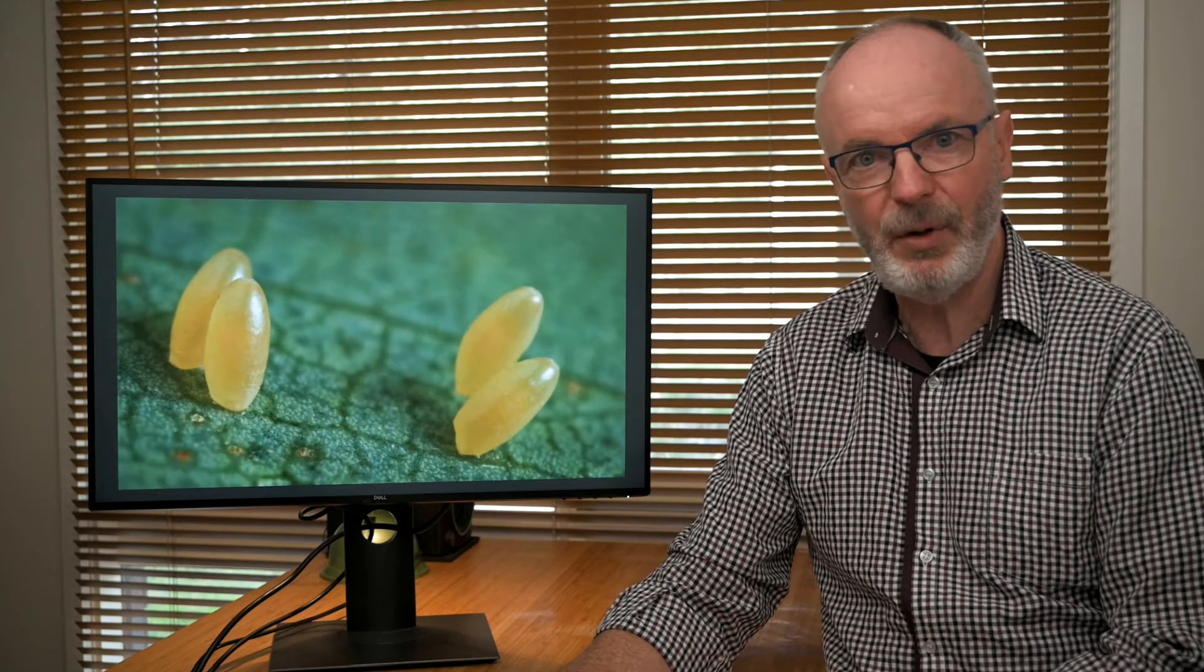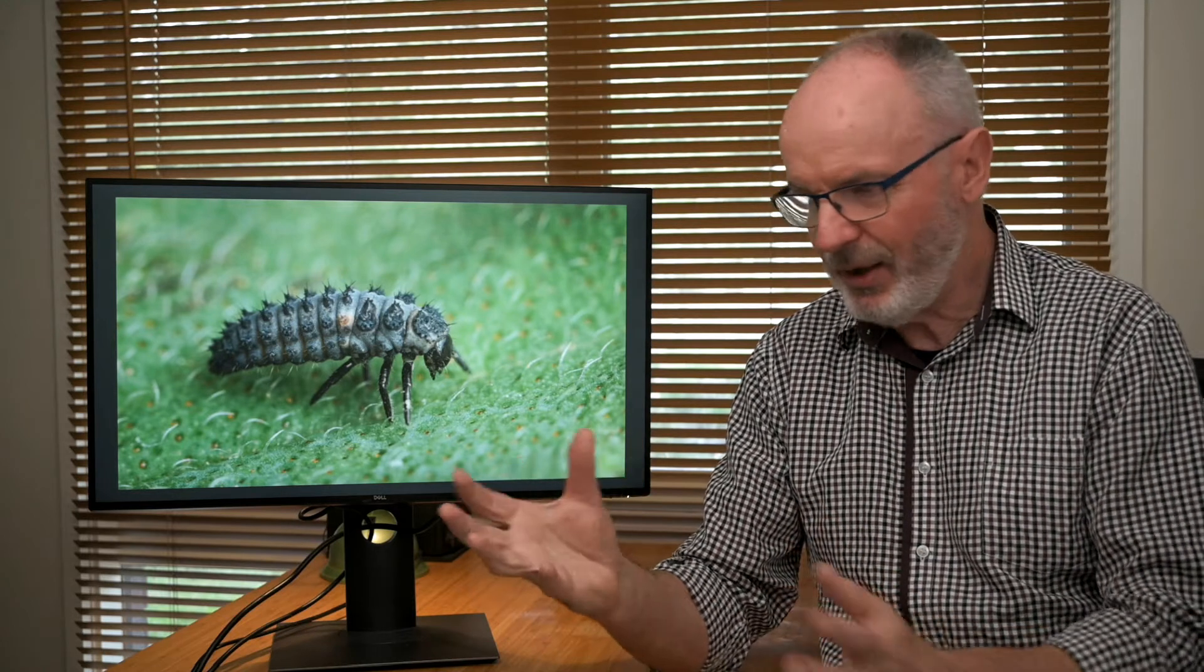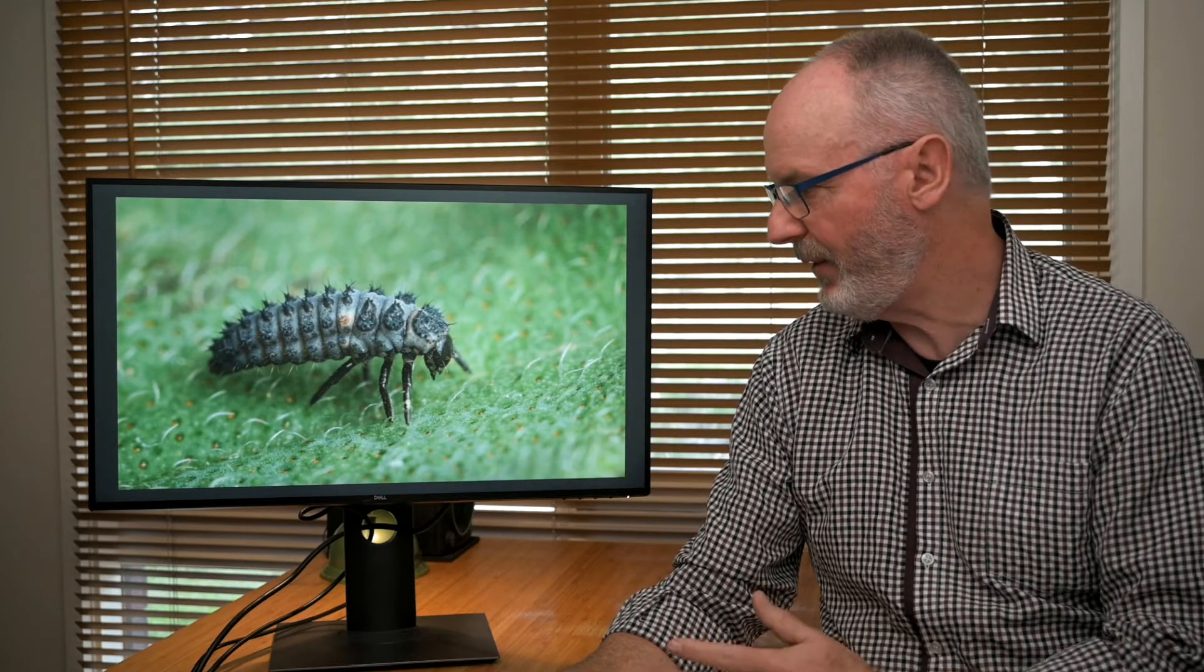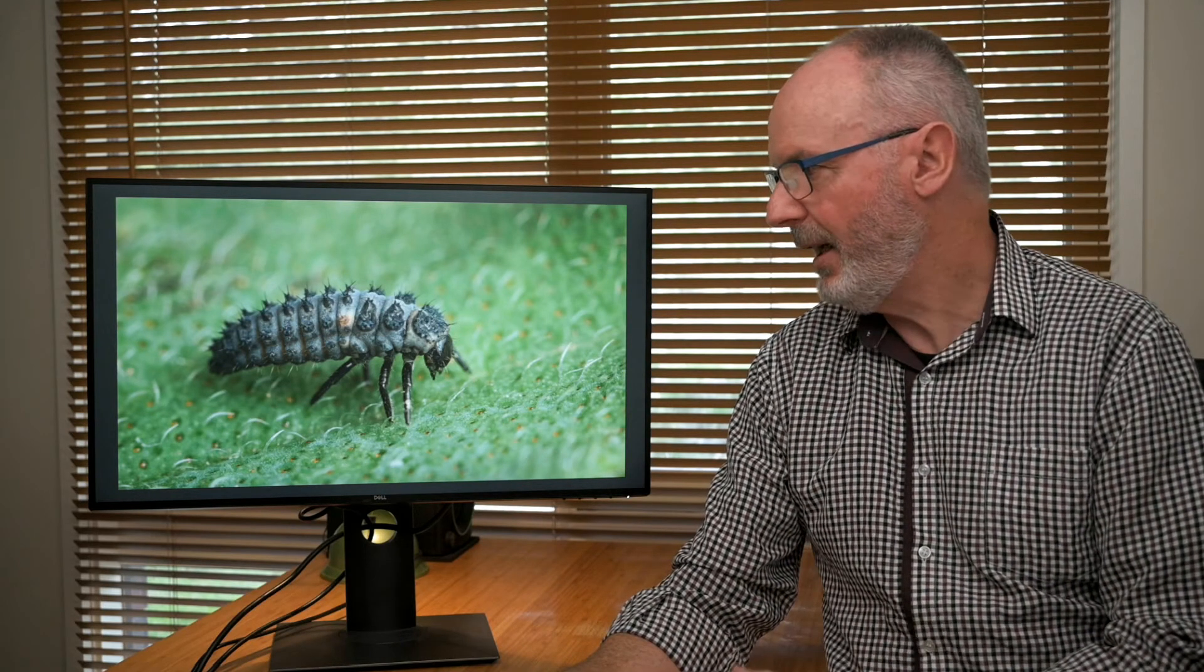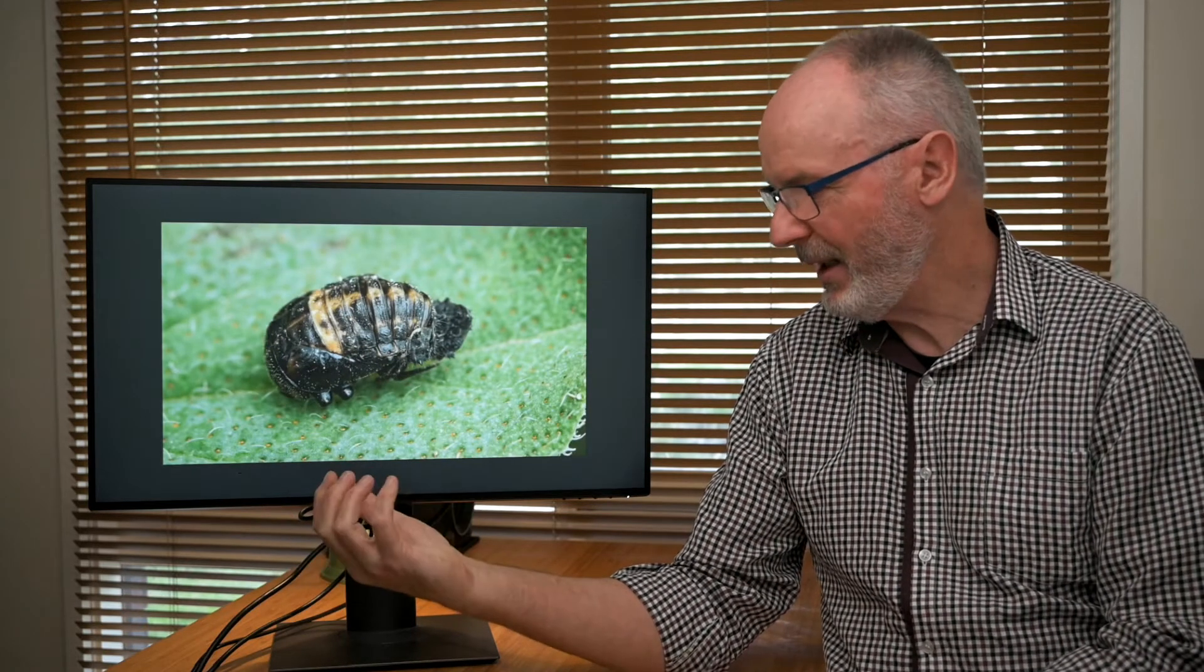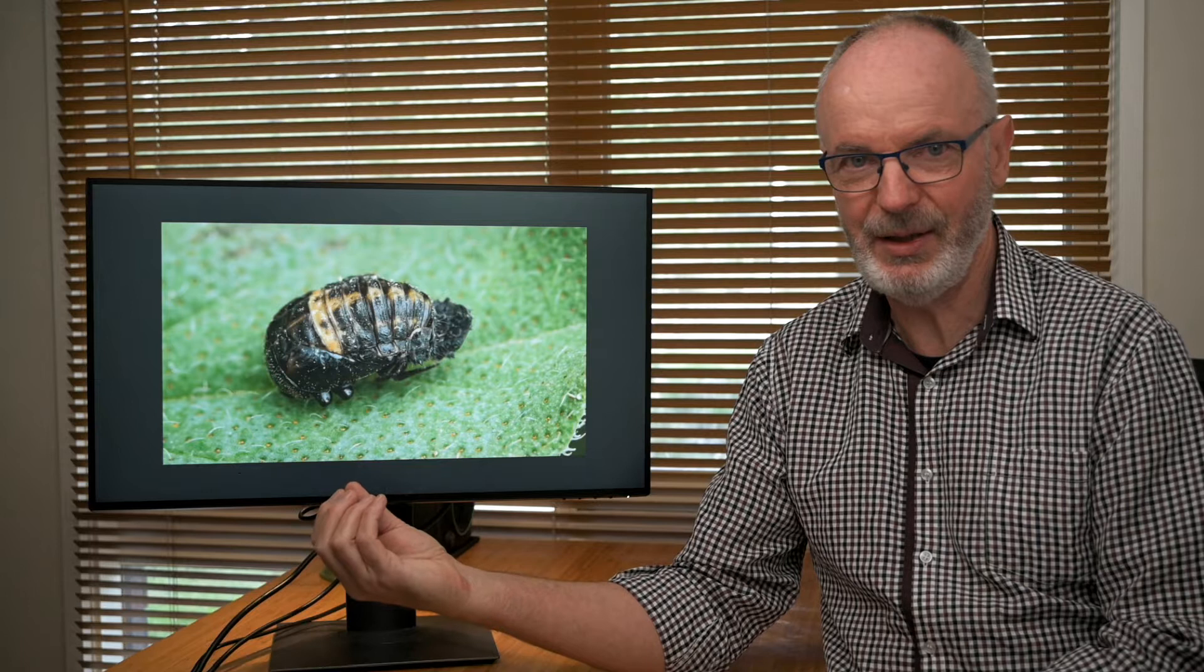Beetles also have this type of life cycle, which includes ladybird beetles. We have eggs, and from the eggs hatch small larvae—these strange little critters which go through their molting phase, their instars, until you get a full-size larva which looks something like this. There are variations in how spiky they are and the colors depending on the species. Then they pupate—that's what a ladybird pupa looks like—and from there you get the adult beetles.